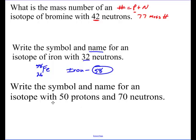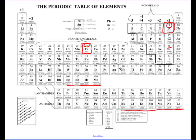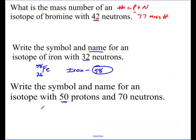Write the symbol and name for an isotope with 50 protons and 70 neutrons. Go to the periodic table and find element 50 — that's tin, symbol Sn. I'll write Sn with 50 on the bottom. The mass number is 50 plus 70 equals 120, so 120 goes on top. This is tin-120. So there's your little intro to atomic number, mass number, atomic mass, and isotopes.